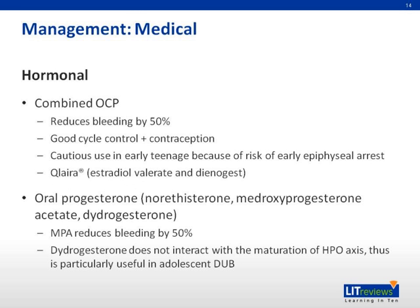There are many hormonal treatments for DUB. Combined OCPs provide good cycle control as well as contraception. However, their use must be cautioned in early teenagers because of the risk of early epiphyseal arrest. Qlaira is indicated for treatment of heavy menstrual bleeding in women without organic pathology who desire oral contraception. Oral progesterone is another class of drugs that can be used to treat DUB. Norethisterone has adverse effects on lipid metabolism, carbohydrate metabolism, and coagulation; thus, it is advised to avoid it in patients with hypertension, diabetes, or hyperlipidemia. Dydrogesterone does not interact with the maturation of the HPO axis, making it particularly useful in adolescent DUB.